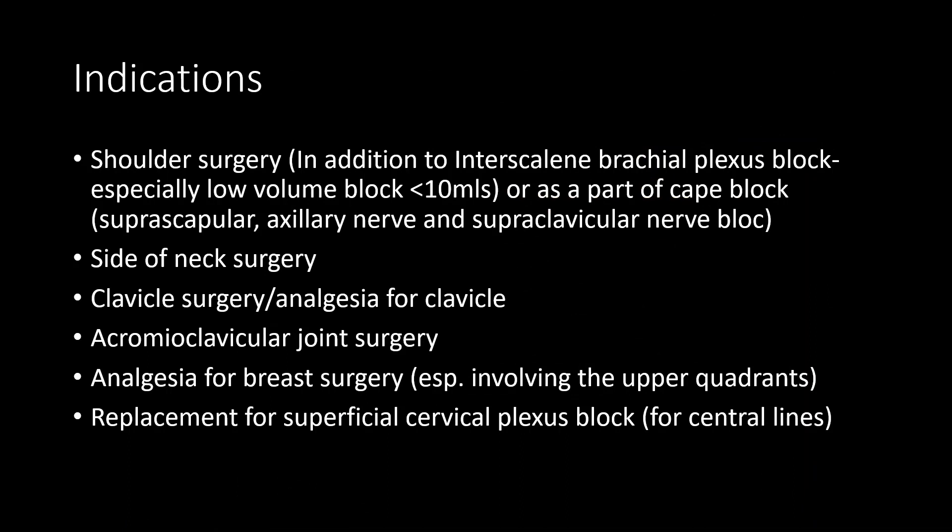The indications to perform a supraclavicular nerve block are predominantly for shoulder surgery, especially when a low volume block is done — typical volumes being less than 10 mls. It can also be combined as part of a cape block where the suprascapular and axillary nerves are additionally blocked, serving as a replacement for the interscalene block. The supraclavicular nerve block need not be done when large volume interscalene blocks of around 20 mls are used, because spillover into the interscalene groove automatically blocks the superficial cervical plexus.